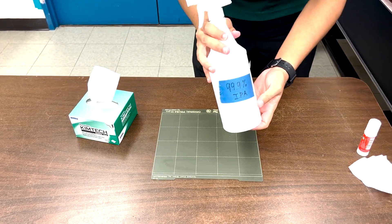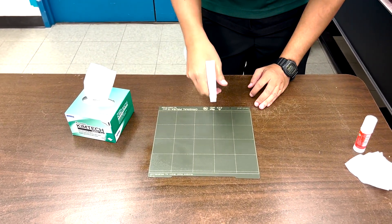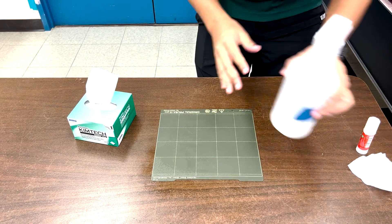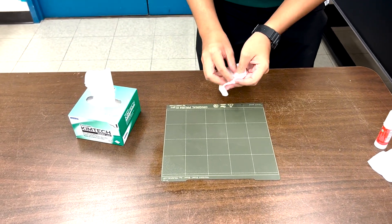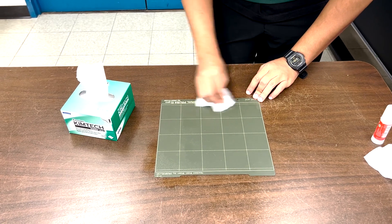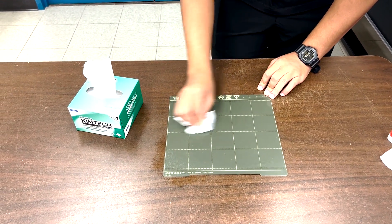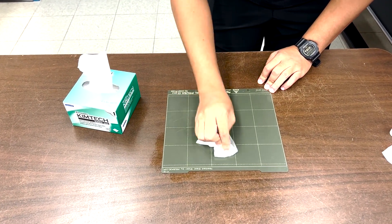With the IPA, spray the build plate. Finally, with the Chemtech wipe again, evenly distribute this IPA and glue solution across the entire plate.